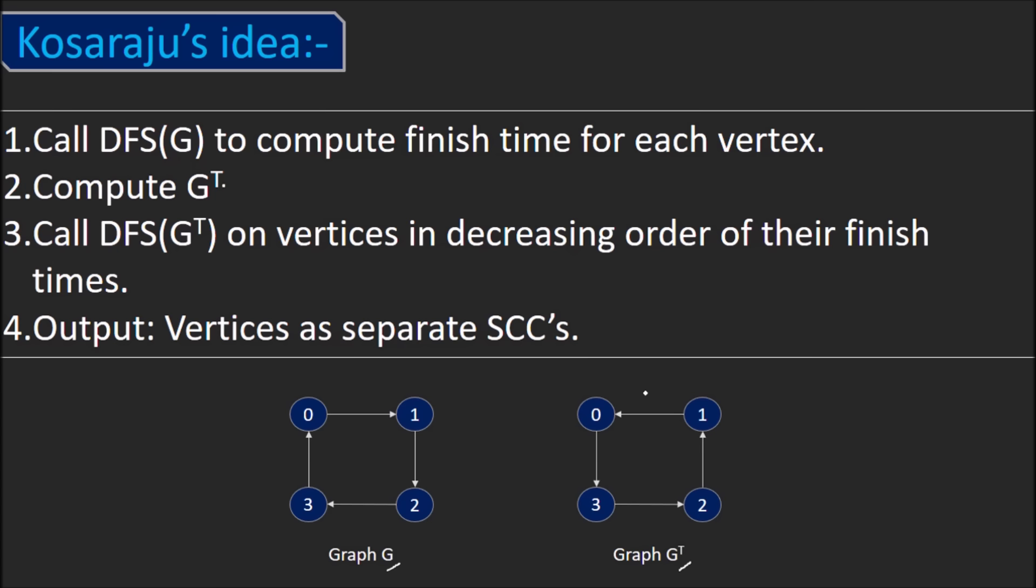Step 3 says call DFS on the transpose graph in the decreasing order of the finish times computed earlier. Hence, the result would be vertices as separate SCCs.